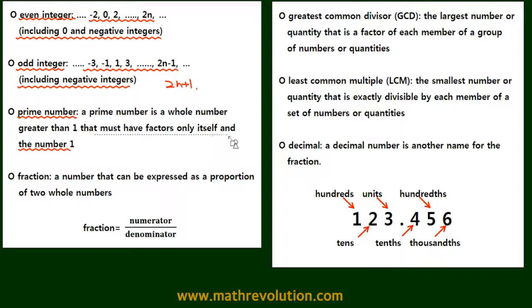So some examples of a prime number would be 2, 3, 5, 7, and 11, and so forth. So these numbers have factors only itself and the number 1.